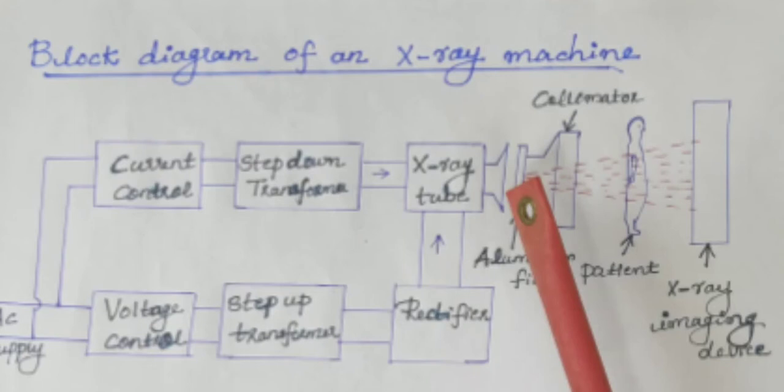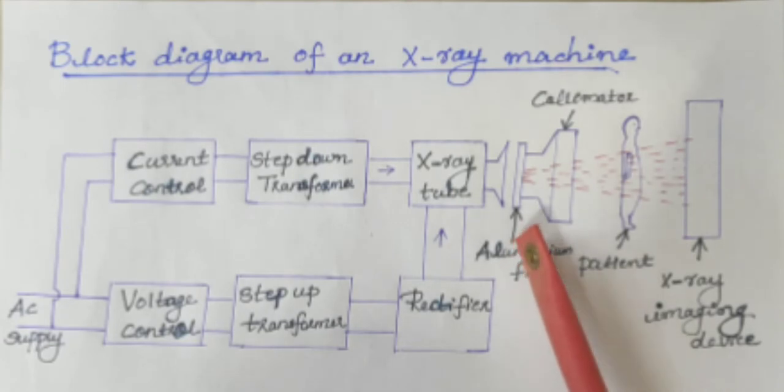Next one is the aluminum filter. Aluminum filters are used to attenuate or block low energy rays during x-ray imaging. Because low energy x-rays decrease the image contrast and they are heavily absorbed by the patient's soft tissue.